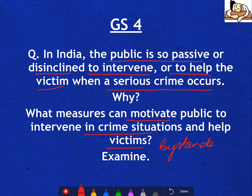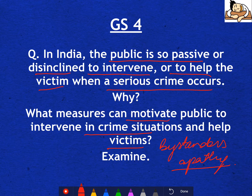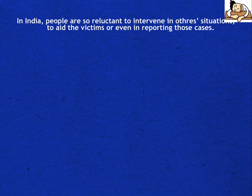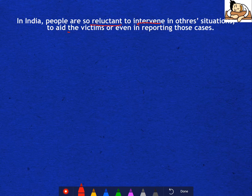This phenomenon is called bystander apathy — when people do nothing, just standing instead of helping others. Like if there is an accident or a crime, people don't help or intervene. In India, people are reluctant to intervene in others' situations, or to aid victims, or even in reporting those cases. This is both a social and psychological phenomenon. One reason is loss of cultural values.